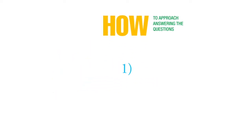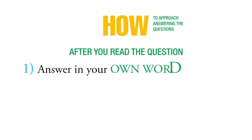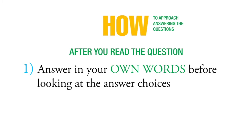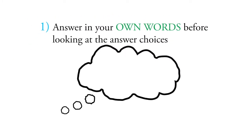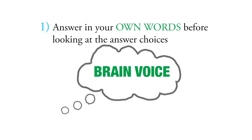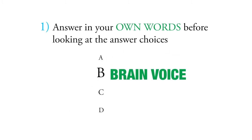So the first group of questions is the kind where, after you read the question, you can answer it in your own words before you look at the answer choices. Once you have answered using your brain voice, then you find the choice that matches your version of the answer.